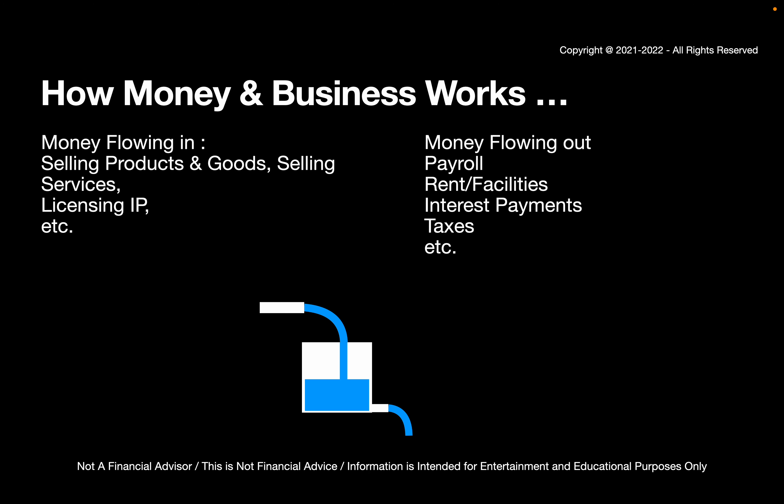The way money and businesses work is you've got money flowing in and money flowing out. Money flowing out can be things like payroll, rent, interest payments if you have any debt, taxes — you might have to pay property tax, you might have to pay income tax — if you're making money. In terms of money flowing in, it's the products and goods that you sell. If you sell services, if you license IP, those are other sources of income.